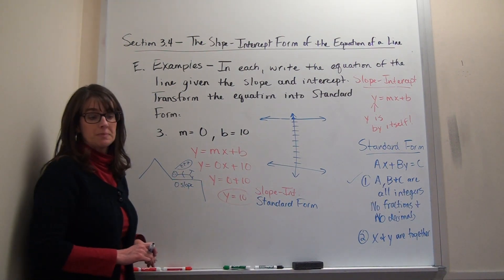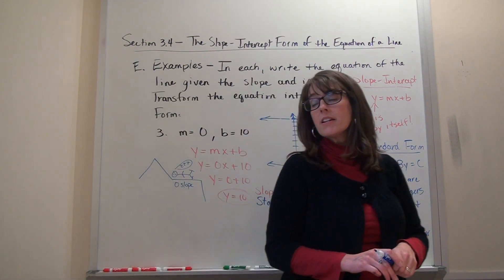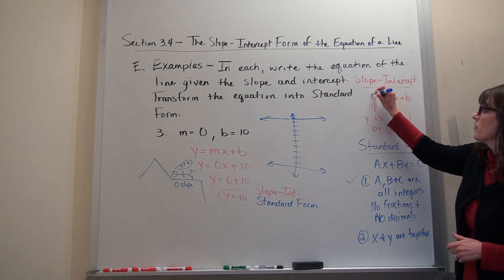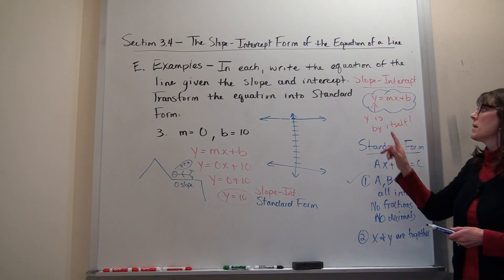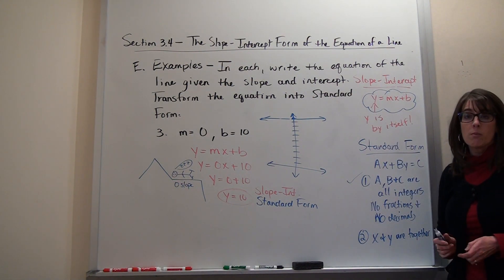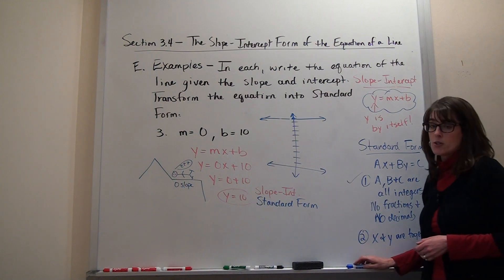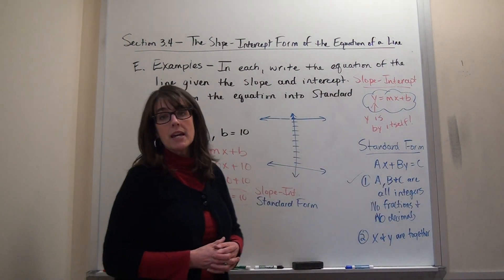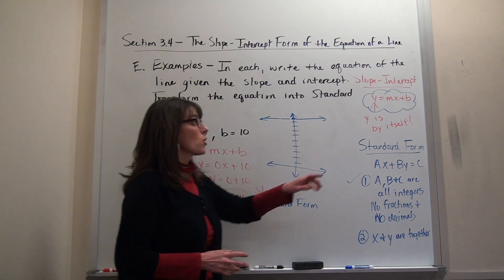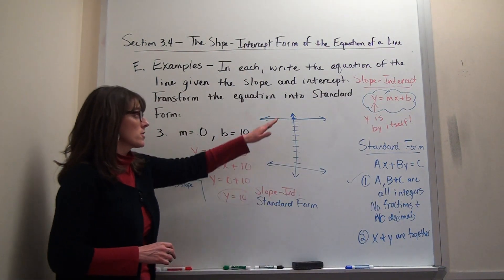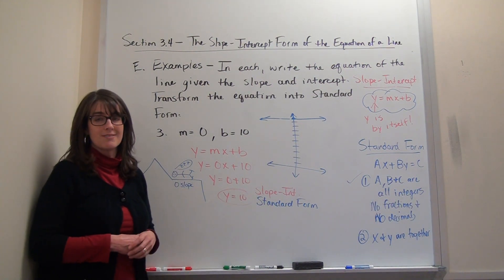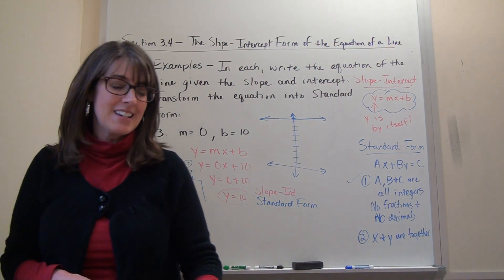So that's the slope-intercept form of the equation of a line. The big thing to remember: make sure y is by itself. When y is by itself, you can pull out the slope and y-intercept. Your slope is a great counting tool but you need a place to count from, so start with the y-intercept when graphing, then use the slope to find the rest of the line. Have a good day.